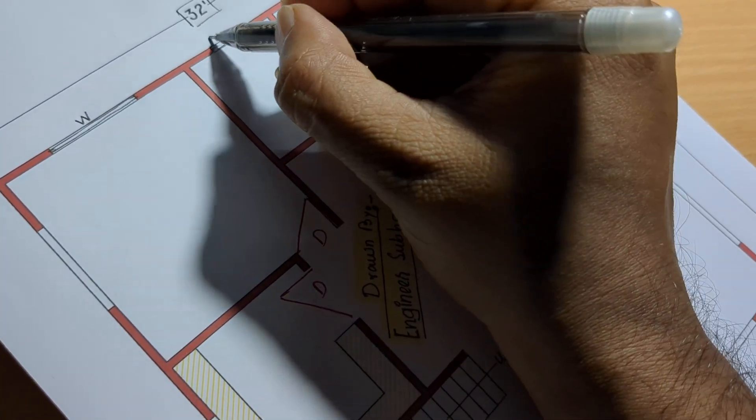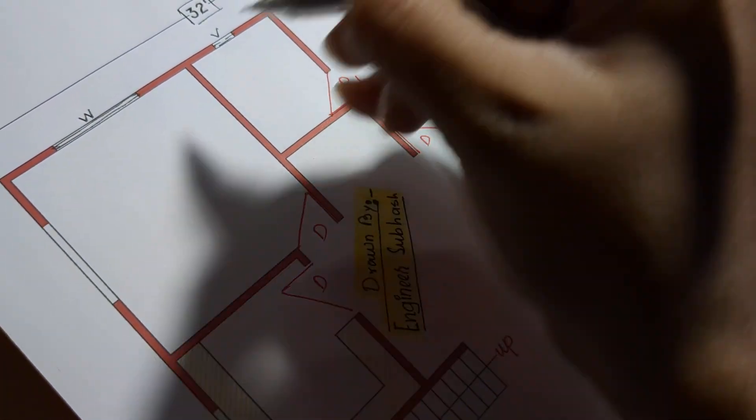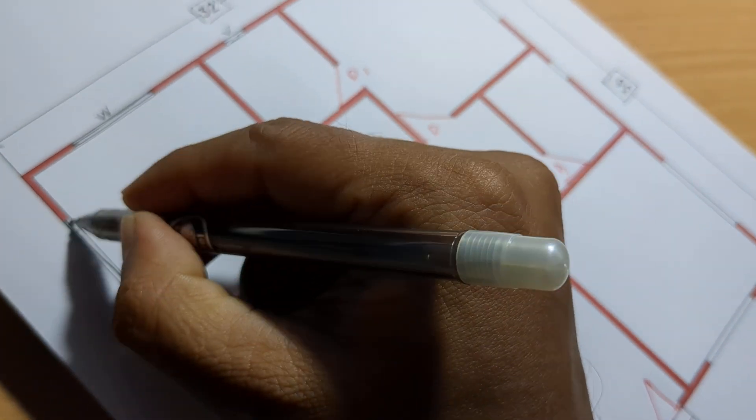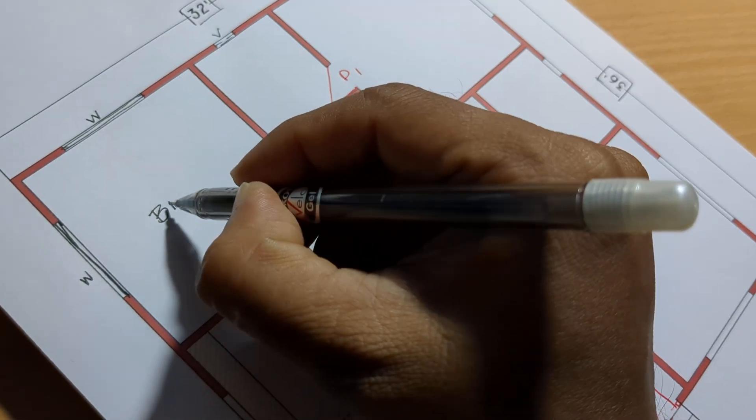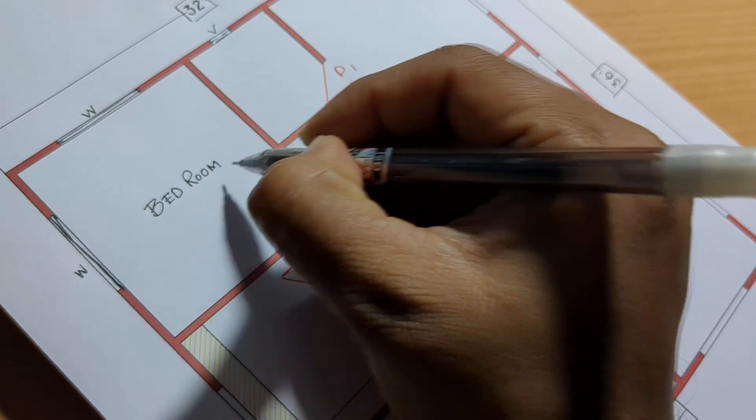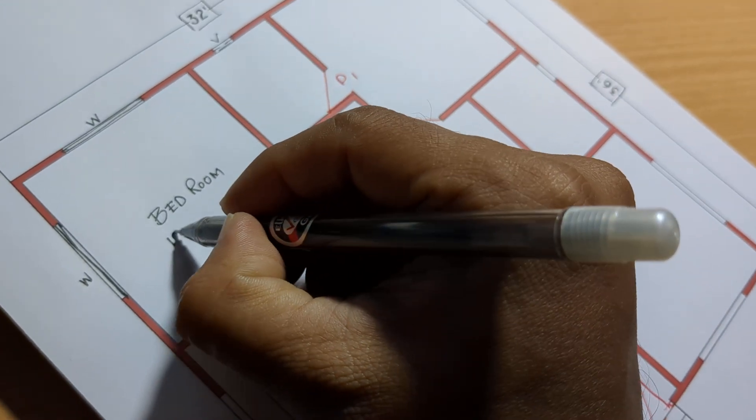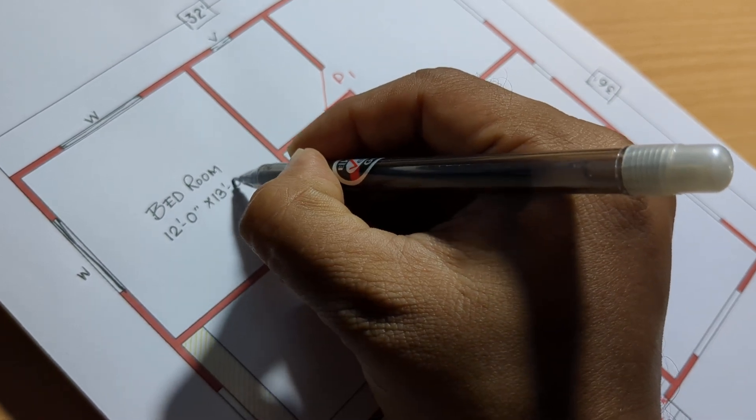Window and ventilator window. Bedroom: 12 feet 0 inch by 13 feet 0 inch.